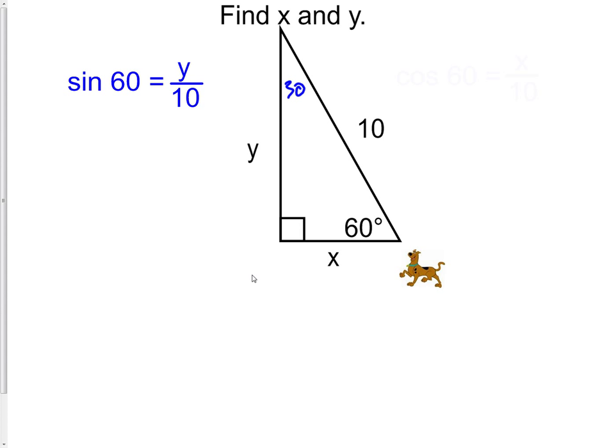Now all we need to do is cross multiply. So we would have 10 times sine of 60 equals y. This is why we needed to know how to enter in values in our calculator. So if we took 10 times sine of 60, we would get 8.660. We have now found the value of y.